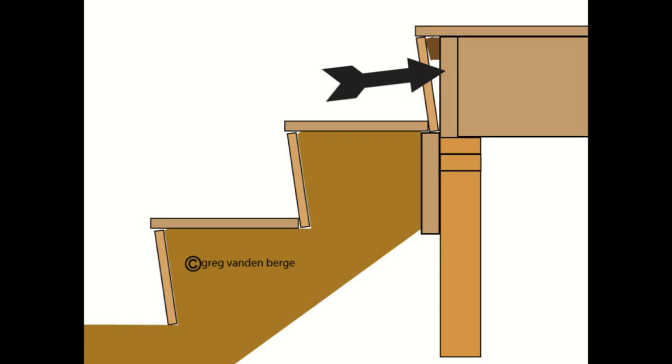Either way, however the stairway connects, the headout is always going to be the section of the floor framing. Whether it's the first floor, second floor, third floor, and so on, where the stairway attaches to the floor framing.